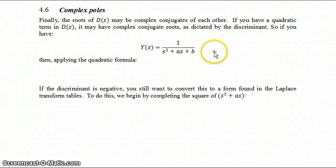So the final case that we look at is when the roots of D of S may be complex conjugates of each other. This could happen if you have a quadratic term in D of S, and that discriminant is less than 0.